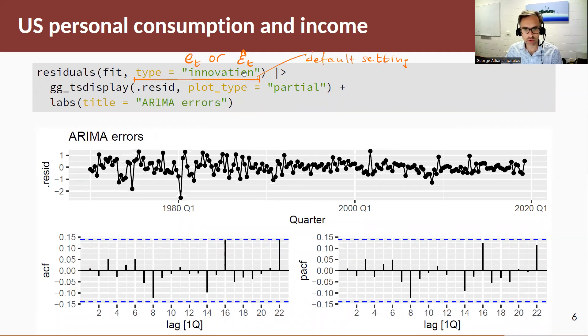Now if I look at the innovation residuals, I should point out here that if I didn't put anything in here, this is the default setting. So if I ask for residuals of fit, it would automatically select the innovation residuals. These are the ones we care about being white noise. So we see here that now we don't have any autocorrelation, so these are white noise. Hence we've done a good job in fitting this model and we are satisfied with the model.